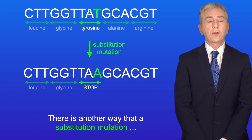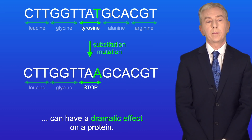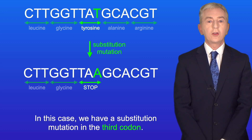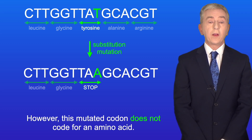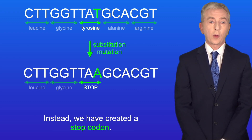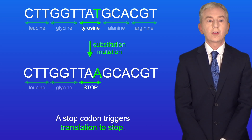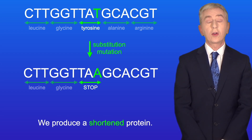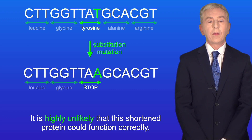There is another way that a substitution mutation can have a dramatic effect on a protein. We have a substitution mutation in the third codon; however, this mutated codon does not code for an amino acid. Instead, we've created a stop codon. A stop codon triggers translation to stop, so we produce a shortened protein, and it's highly unlikely that this shortened protein could function correctly.